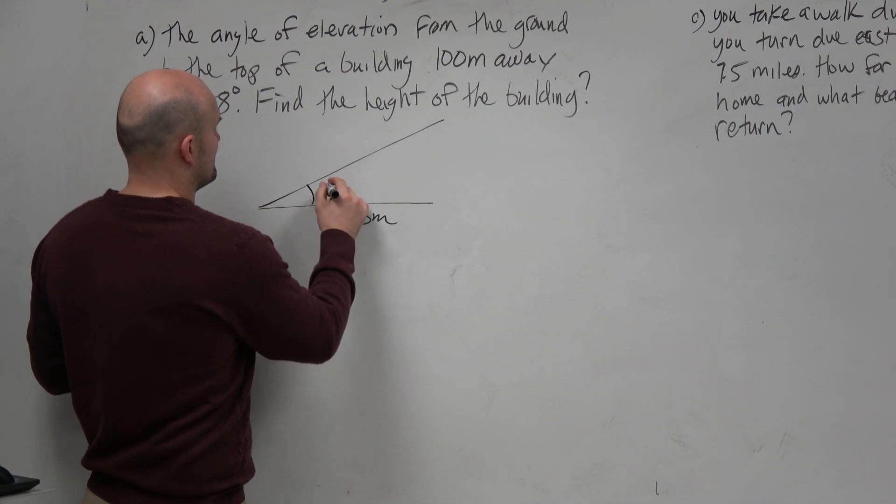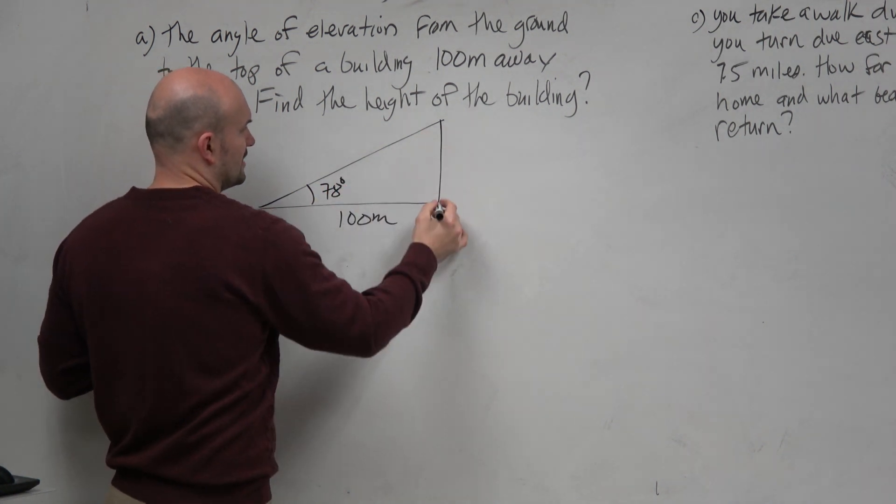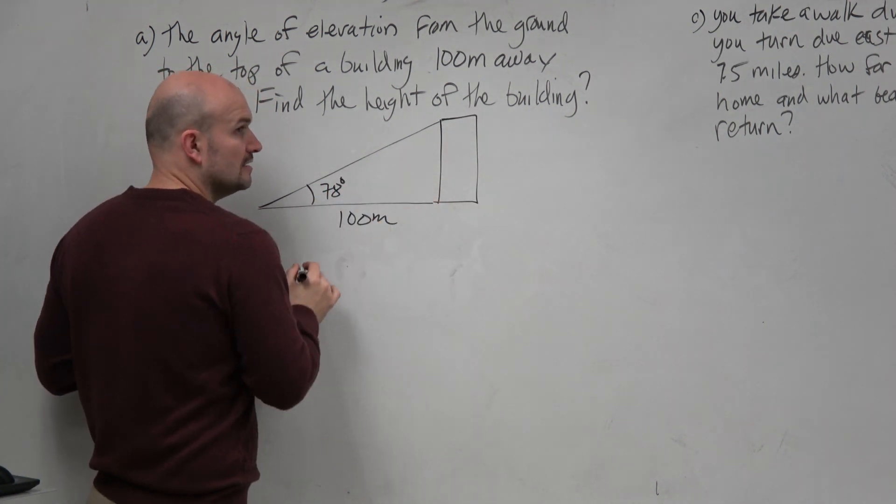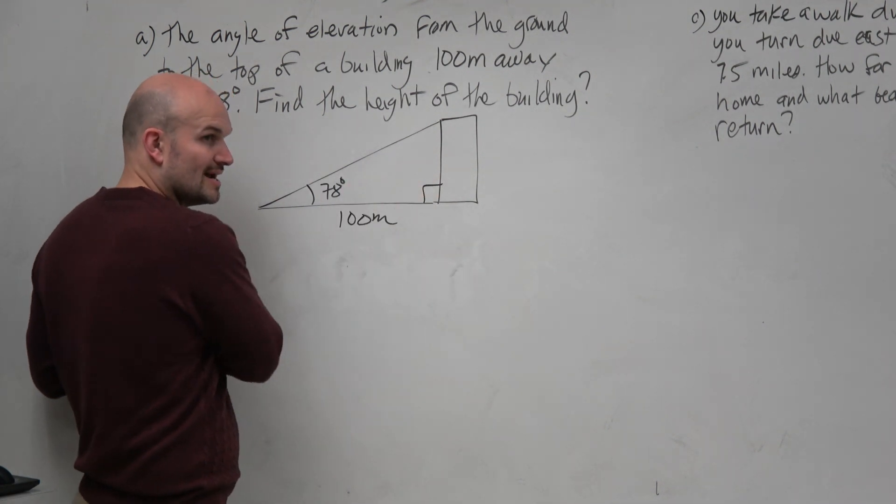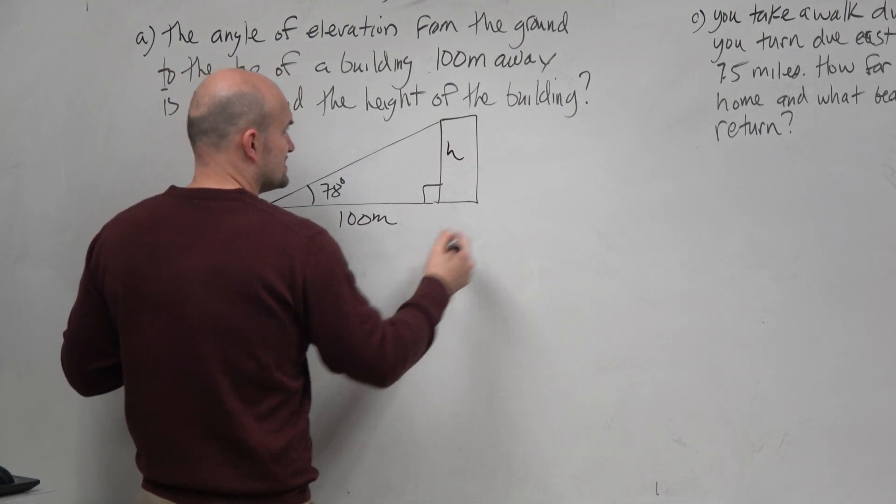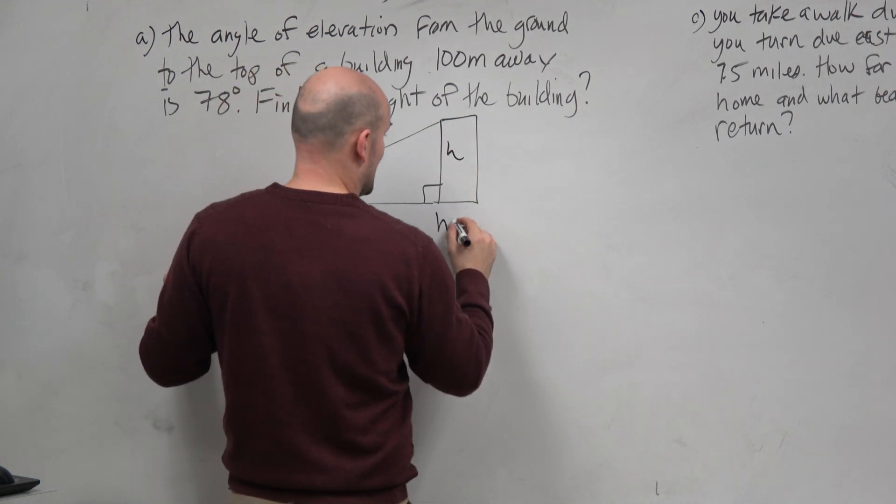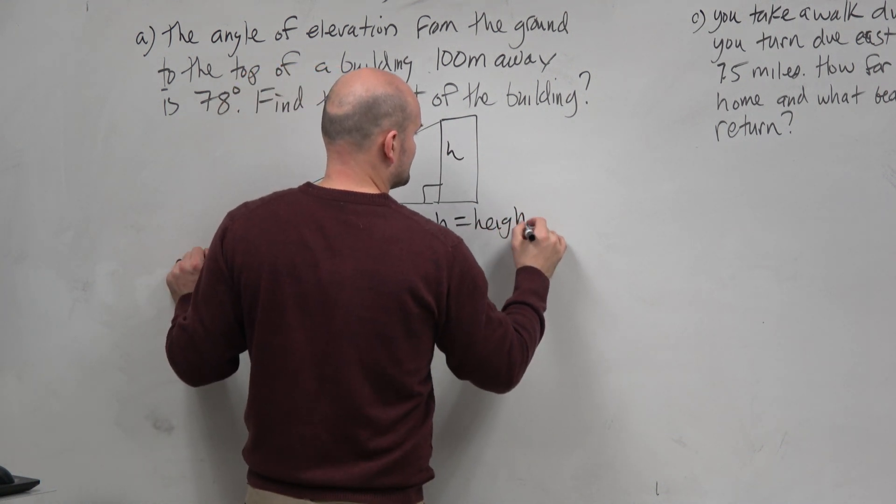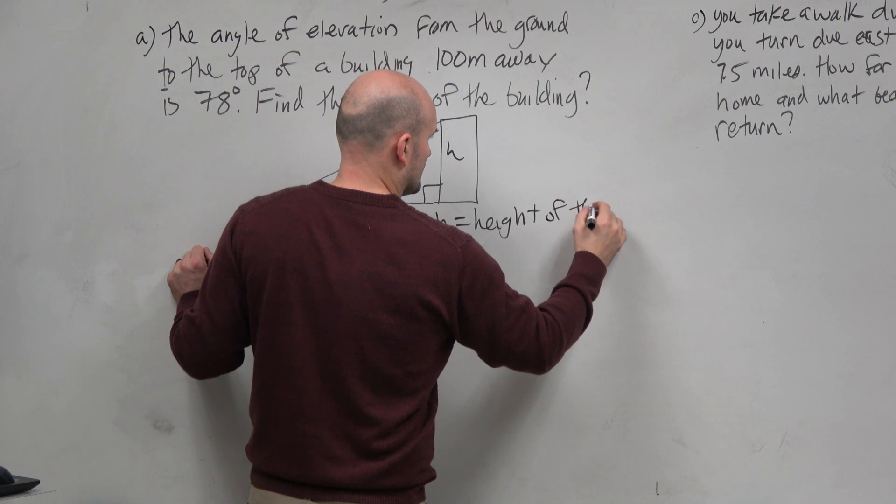This distance is 78 degrees. And then you have a top of the building. Now I can rewrite this as a right angle. And then we're trying to find what? H. So we're going to say, oh, I'm creating a variable. So I'm going to say H equals the height of the building.